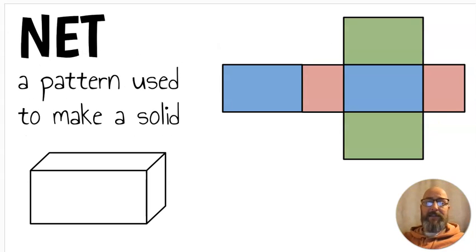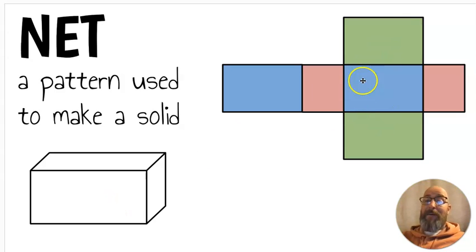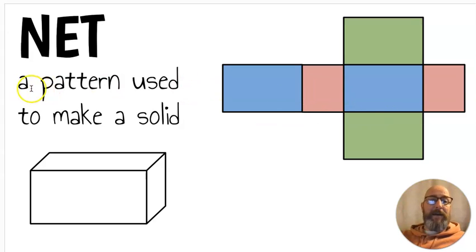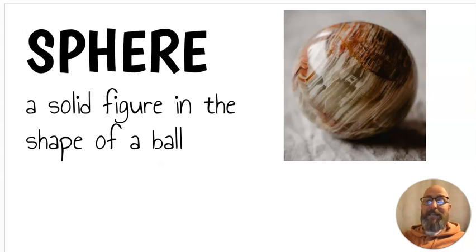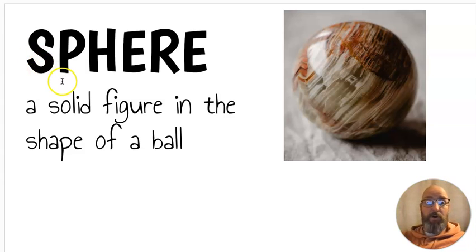Next we have net. A net is a pattern used to make a solid. For example, we have a solid rectangular cube, and if I were to take this net, this pattern, and fold it up, it would make a rectangle — we have the two ends, the sides, the top, and the bottom. That's a net: a pattern used to make a solid. Next we have a sphere. A sphere is a solid figure in the shape of a ball — think about a basketball or a tennis ball. Those are spheres.